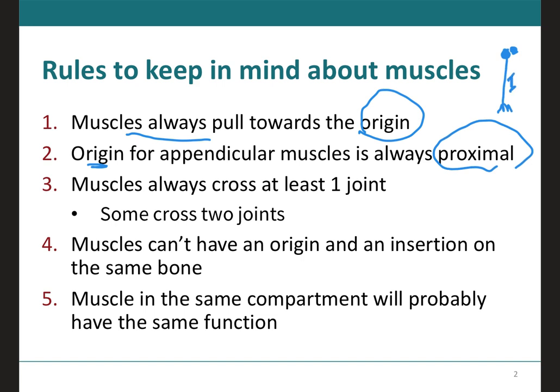The muscles have to cross at least one joint to be able to pull on that bone. But there are some muscles that do cross two joints — if they cross two joints, they will do two actions. They will perform an action at one of the joints that it is crossing, and they will perform another action at the other joint. Muscles can't have an origin and an insertion on the same bone; they need to be crossing at least one joint to perform an action.